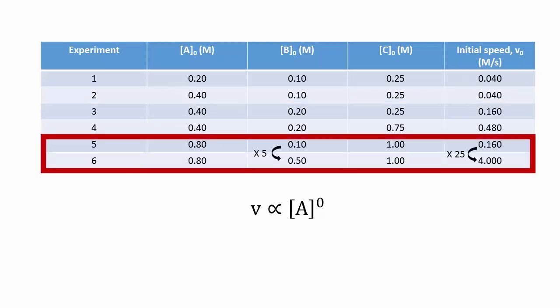For reactant B, we see that B's influence is quadratic, as increasing B's concentration by a factor of 5 makes the reaction go 25 times faster.